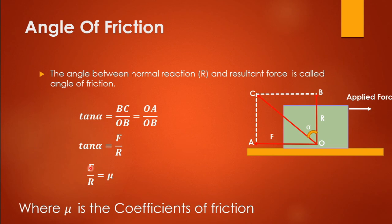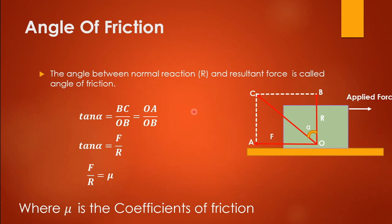Remember: mu = F/R, where F is the frictional force and R is the normal reaction. This is about the angle of friction. For today, go through this material, and if you have any doubts you can ask me. I hope all of you understood. Thank you.